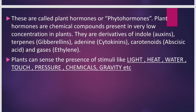Plant hormones are chemical compounds present in very low concentration in plants. They are derivatives of indole — that is auxins; terpenes — gibberellins; adenine — that is cytokinins; carotenoids; abscisic acid; and gases — ethylene. So they are derived from these compounds. Ethylene is a gas. Plants can sense the presence of stimuli like light, heat, water, touch, pressure, chemicals, and gravity, and accordingly they will release the hormones.